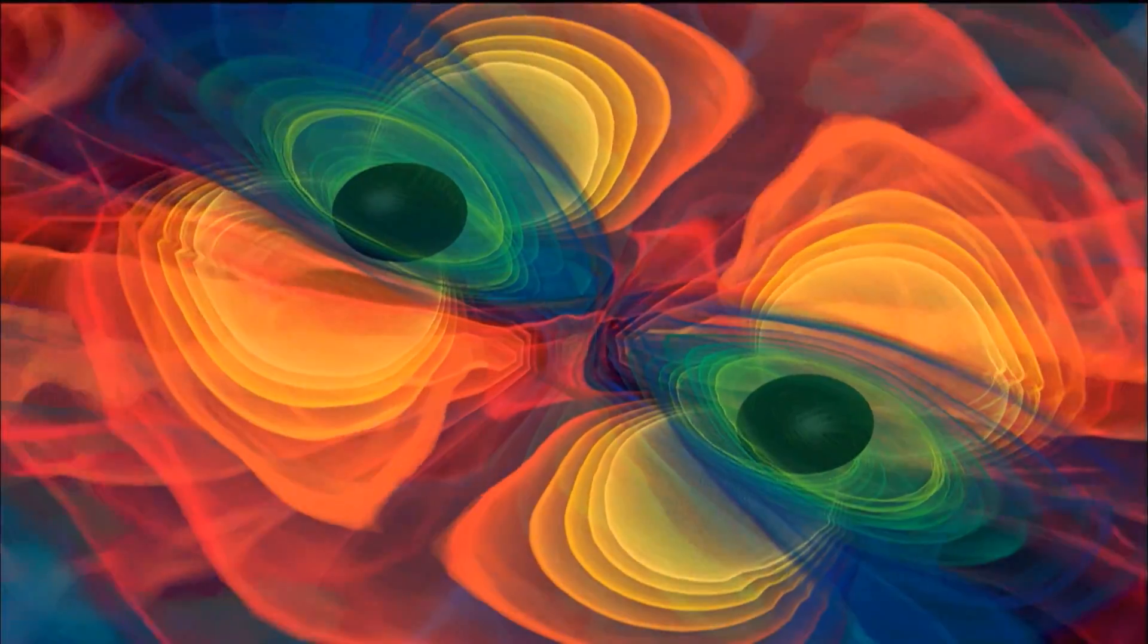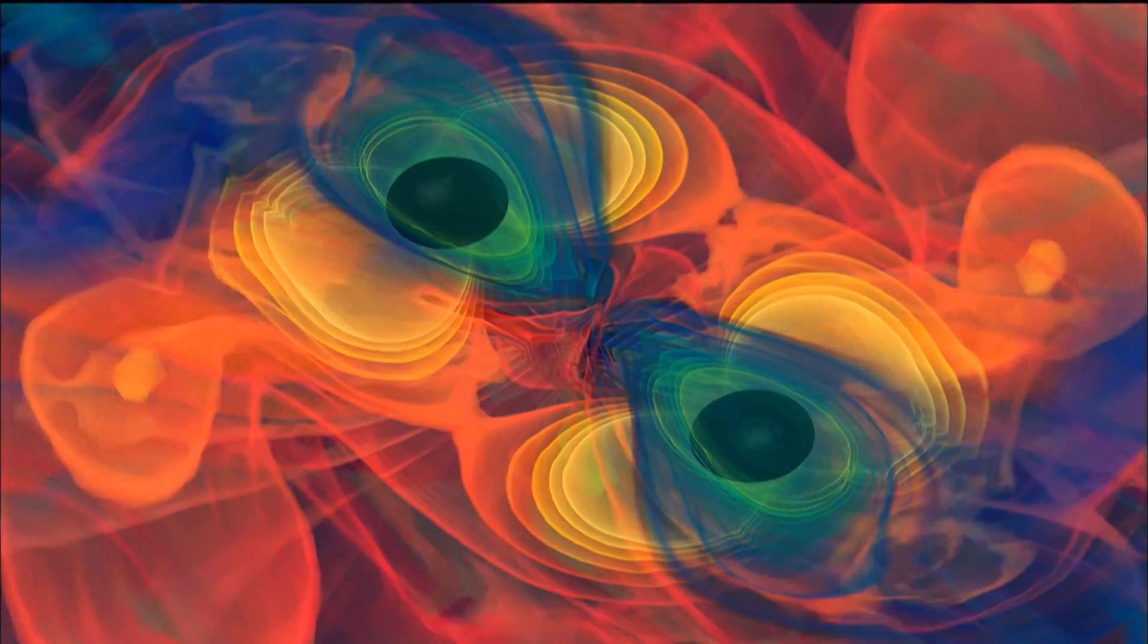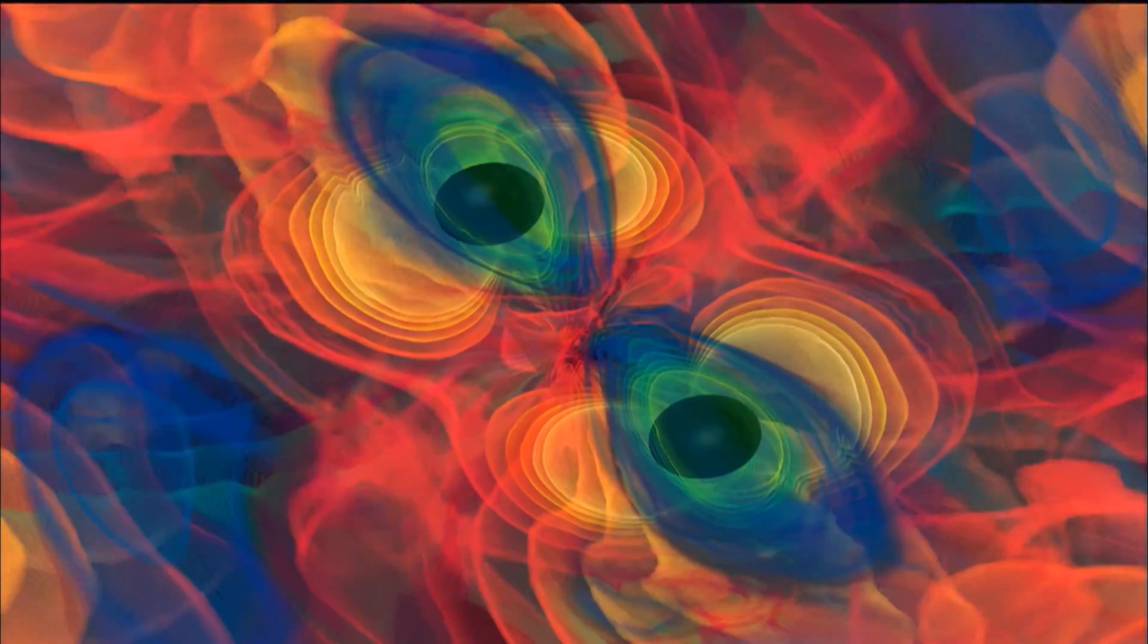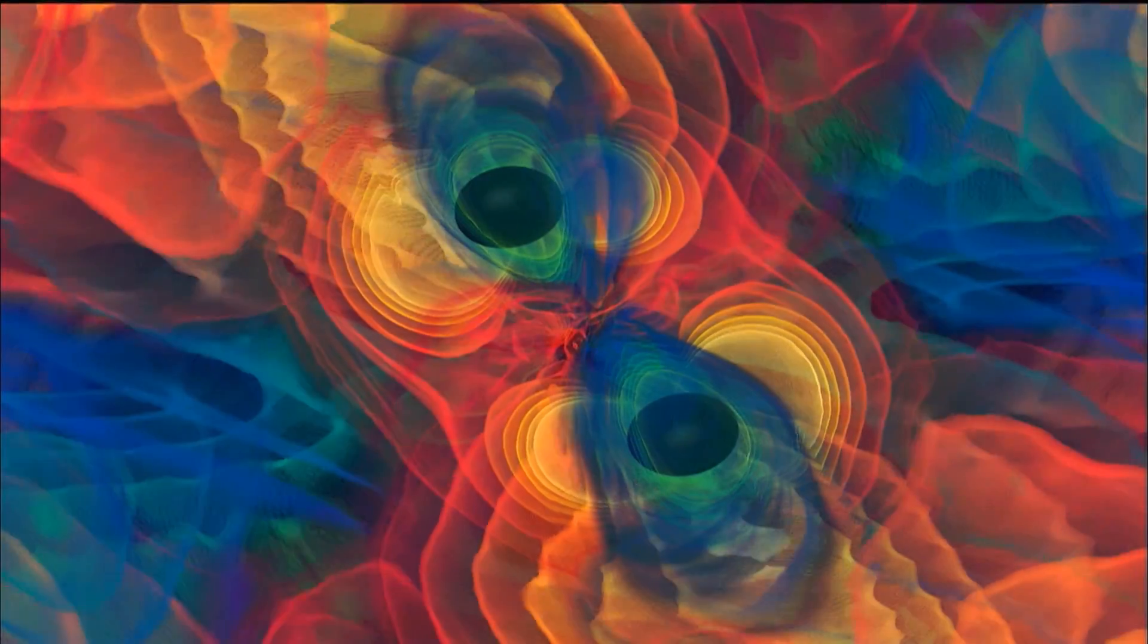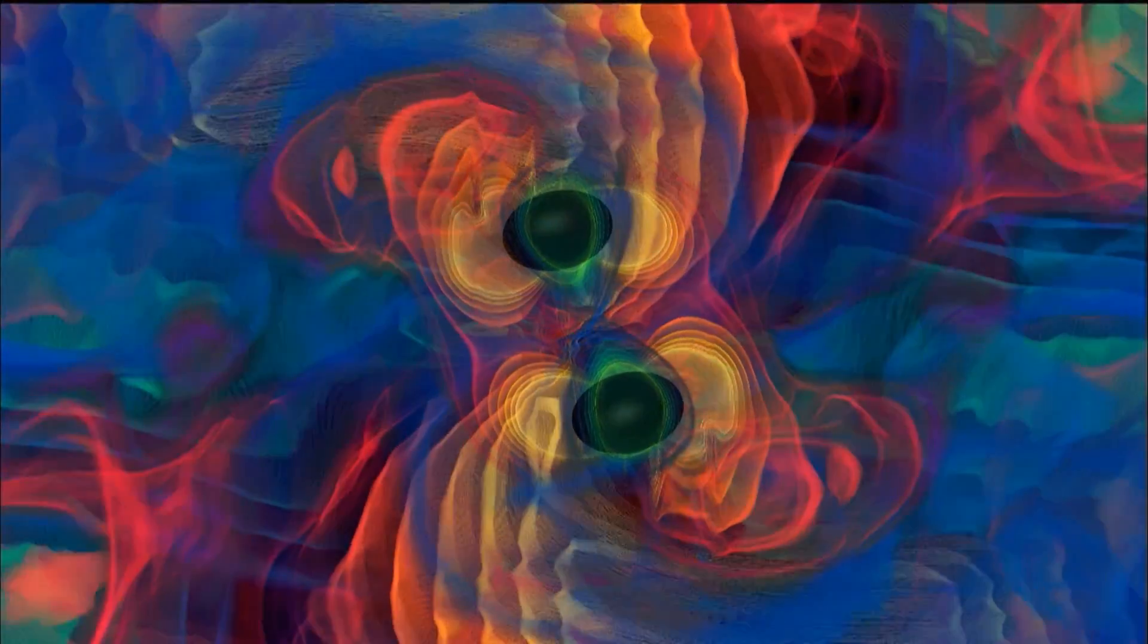This simulation shows what happens. As two black holes get close, they turn space into a turbulent sea of gravity waves. These waves have the effect of carrying energy away from the orbit itself. That allows the pair to draw each other in, and merge into one.